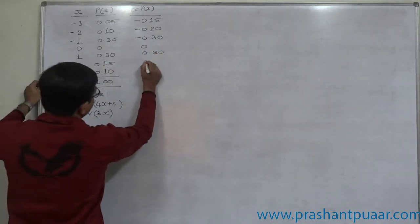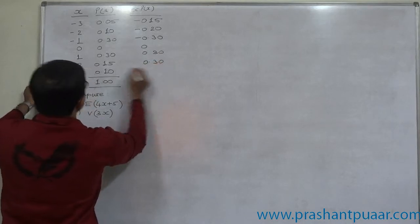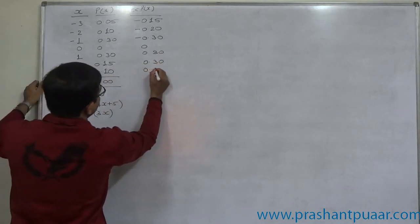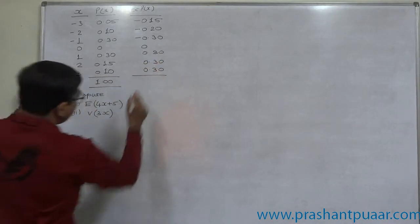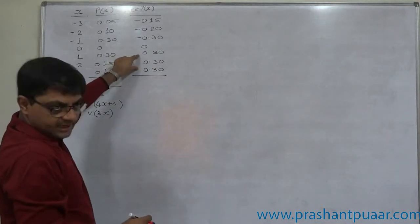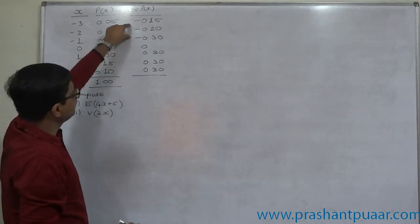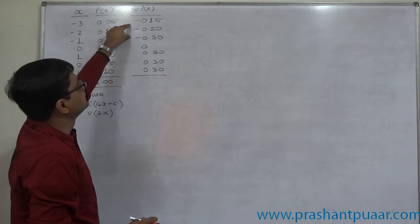2 into 0.1 is also 0.3. And 3 into 0.1 is also 0.3. The total of positive numbers comes to 0.9. And the total of negative numbers comes to 0.65.